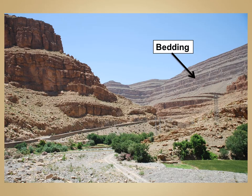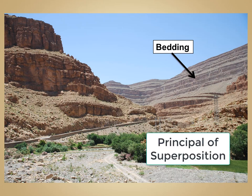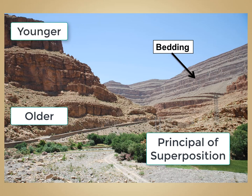This is often called layered cake geology. Another key principle in geology related to original horizontality is the principle of superposition, where the oldest layer is on the bottom and layers become increasingly younger as you move upwards.